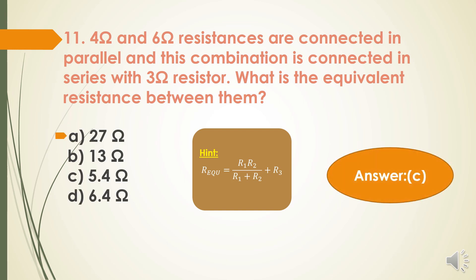Next question: If a 4 Ω and 6 Ω resistance are connected in parallel, and this combination is connected in series with a 3 Ω resistor, what is the equivalent resistance? The parallel combination is calculated as R1×R2 / (R1+R2) = (4×6) / (4+6) = 2.4 Ω. Then this is added in series with the 3 Ω resistor: equivalent resistance = R1R2/(R1+R2) + R3 = 2.4 + 3 = 5.4 Ω. The answer is option C, 5.4 Ω.